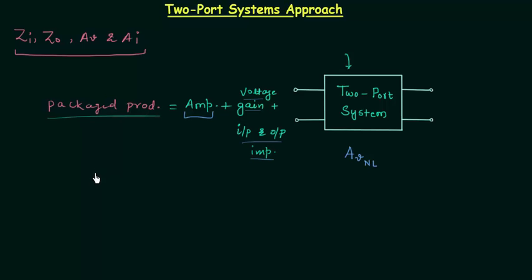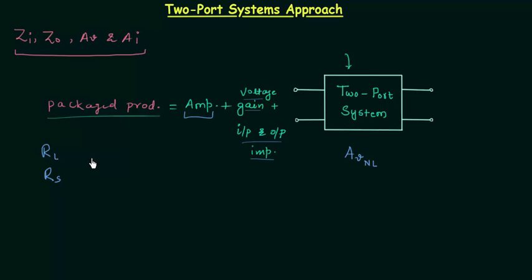Now I will answer one very important question: why are we doing this? Why follow the two-port systems approach instead of what we have been doing till now? By doing this, there is no need to know the internal components of the package or the construction of the amplifier circuit. You can also evaluate the effect of an applied load resistance and source resistance. So there are two advantages: you don't have to worry about internal components, and you can quickly obtain the effect of load resistance and source resistance.